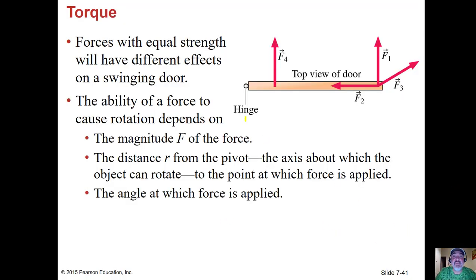Here's a hinge. Forces with equal strength have different effects on a swinging door. Pretend you're trying to open the door where F4 is — you'll have a much harder time than over here where F1 is applied, because F1 has a larger lever arm. With F2, you have no hope of opening the door — you can't open a door by pushing on the edge of it toward the hinge. Think of torque as the ability to get something to rotate.